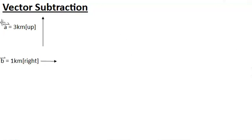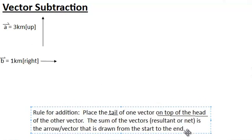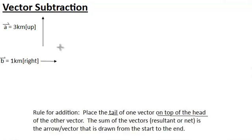Let's say we are given two vectors right here: vector A and vector B. I've already provided for you the magnitude and the direction for each. Vector A is 3 km up, vector B is 1 km right. So how do we subtract vectors? First, I'm going to start by putting this back in here. This is our rule for addition. We know that for addition what we do is place the tail of one vector onto the head of the other vector. So what if I wanted to subtract vector A from vector B? How would I do this? Well, what is subtraction really?